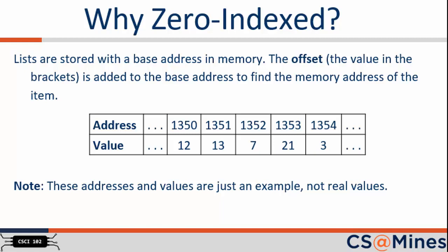For example, suppose we have a list with elements 12, 13, 7, 21, and 3. Further, suppose that this list is stored in memory at base address 1350. By the way, this is just an example base address, not a real one. If we want to access the first element in the list, the memory address is 1350 plus 0. If we want to access the second element in the list, the memory address is 1350 plus 1, etc. Thus, the index of the first element where the value 12 is stored is 0.